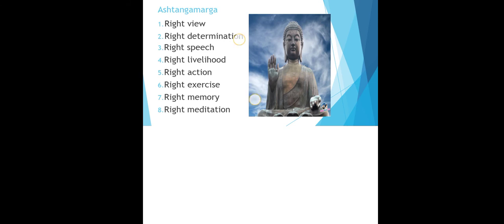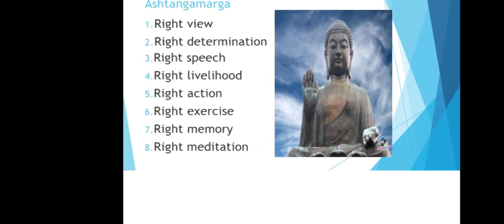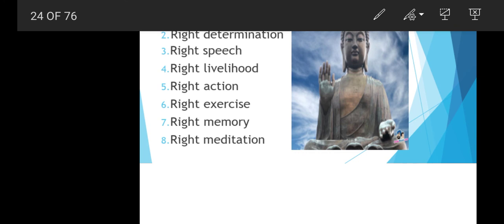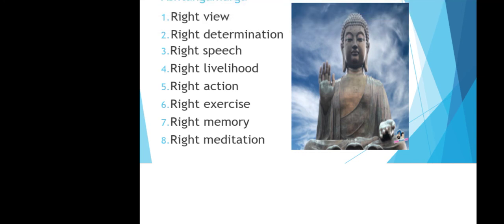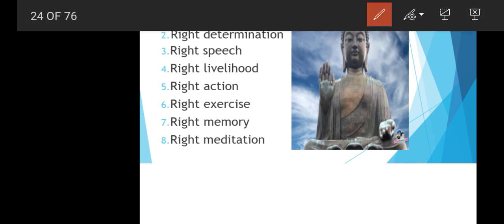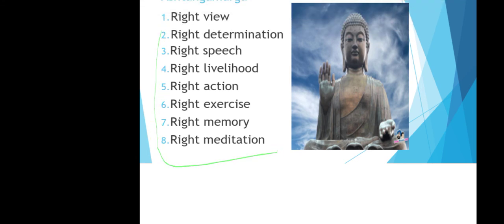Buddha also gave the Ashtanga Marga or Eightfold Path, which consists of: right view, right determination, right speech, right livelihood, right action, right exercise, right memory, and right meditation. This eightfold path is a core teaching of Buddhism.